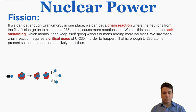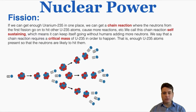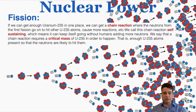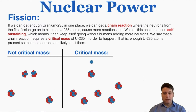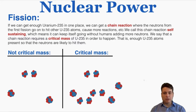If we can get enough uranium-235 in one place, we can get a chain reaction, where neutrons from the first fission go on to hit other uranium-235 atoms, causing more reactions. Those create more neutrons, which hit more uranium-235, and it keeps expanding. This chain reaction is self-sustaining — it can keep going without humans adding more neutrons. A chain reaction requires a critical mass of U-235, meaning enough atoms present so that neutrons are likely to hit them. Without critical mass, neutrons go in random directions and are unlikely to hit other U-235 atoms. With critical mass, more atoms get hit, creating more neutrons, and so on.